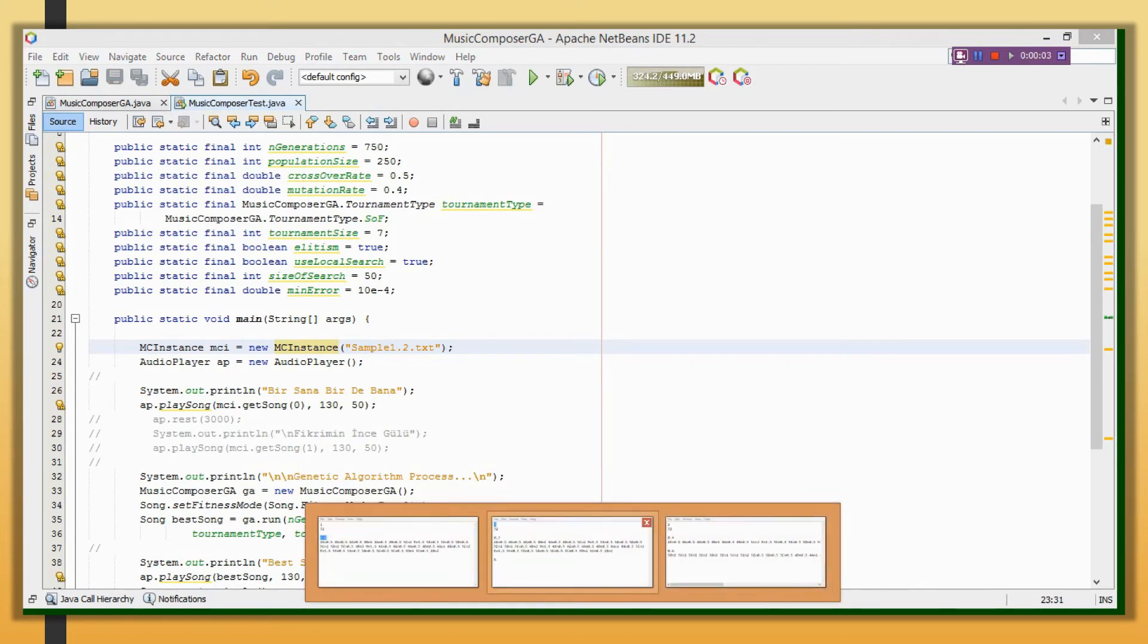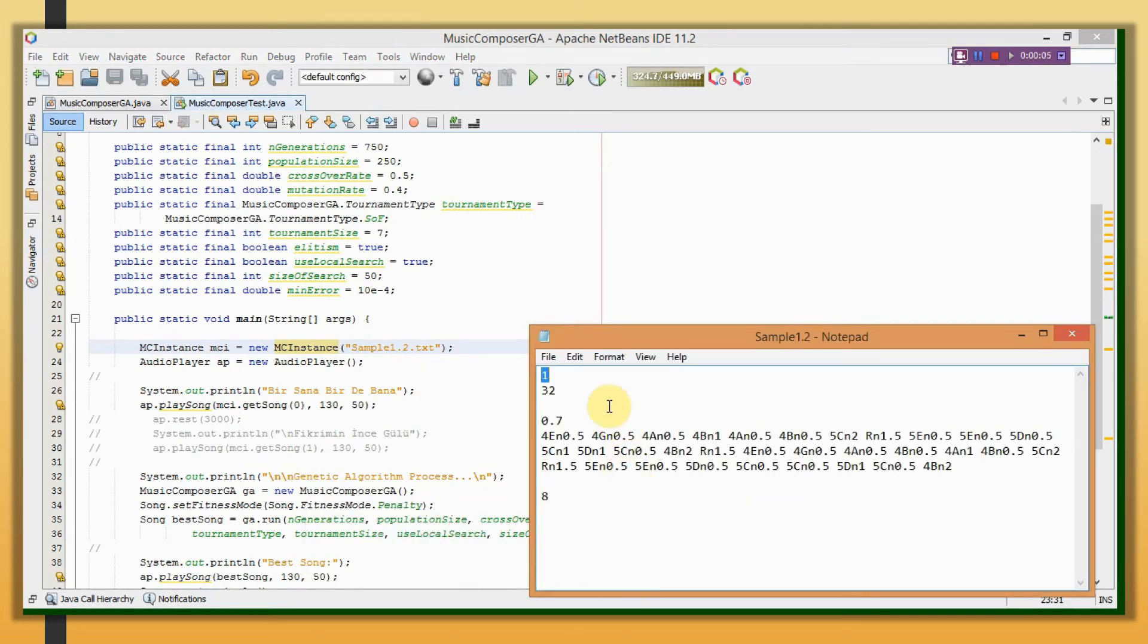Now, let's run the program with the second instance. It also contains only one song, and desired similarity rate is 0.7. This time, there is a constraint. The interval between two consecutive notes can be maximum 8. Let's see together what we will get.